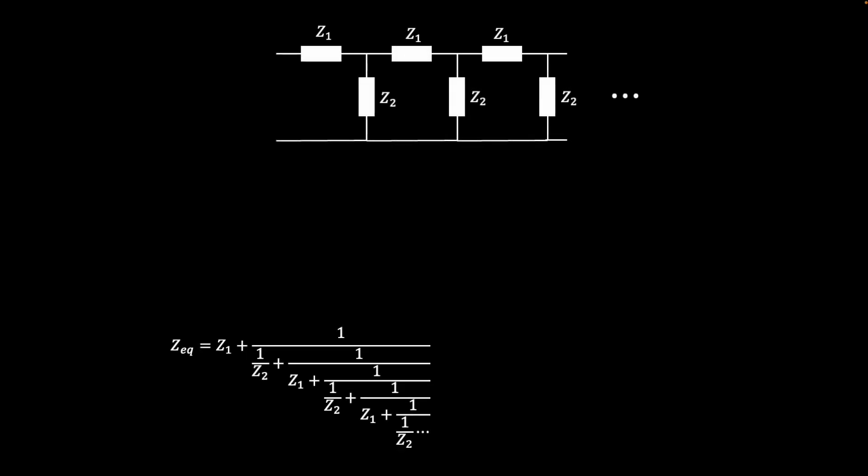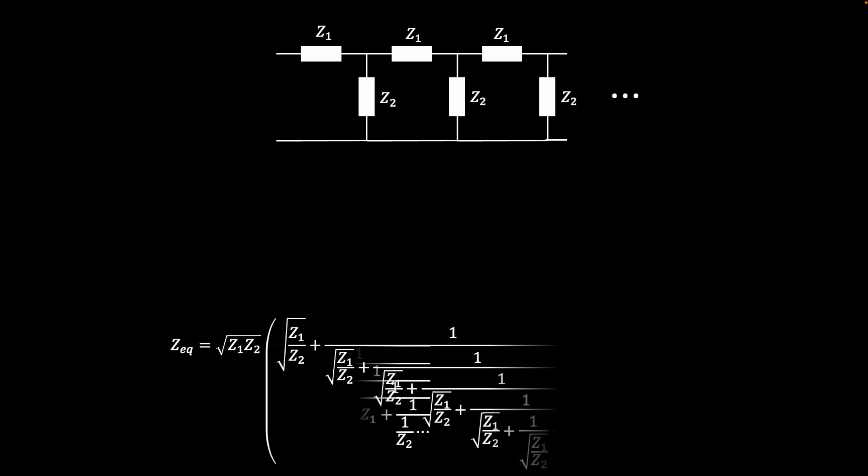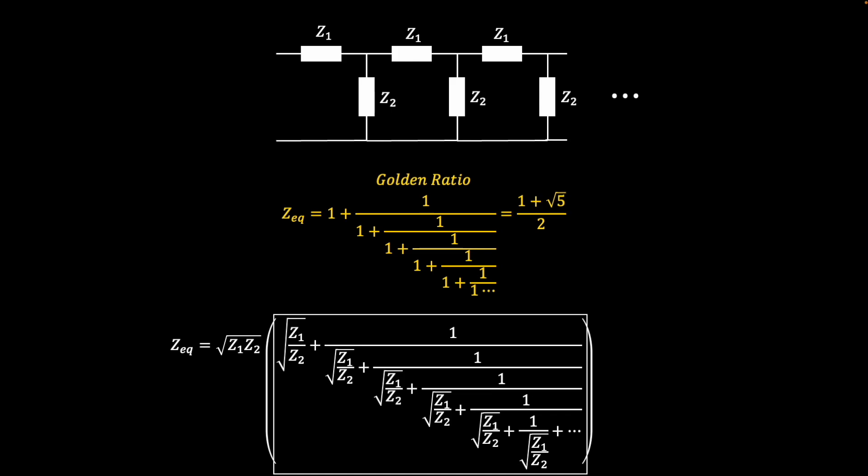The ladder network with just two different elements is more straightforward to solve. The first step is to pull the square root of the product of the two impedances out of the fraction. This leaves a series of terms inside the fraction that are all the same. This form of continued fraction is similar to the golden ratio we saw earlier, as well as the other metallic ratios which all have the same term in each step of the fraction.